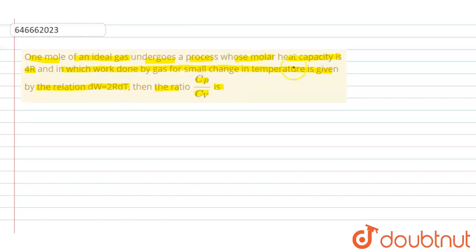Now in this question, molar heat capacity is 4R. So the value of C for the process is 4R.